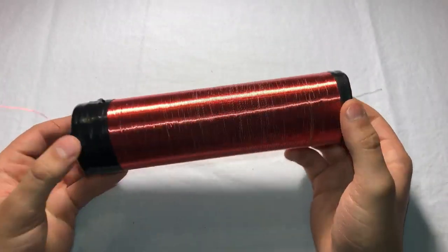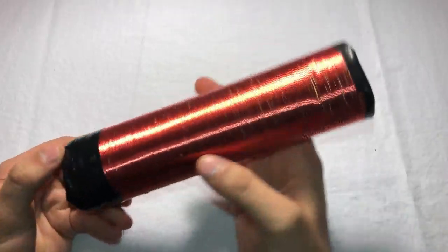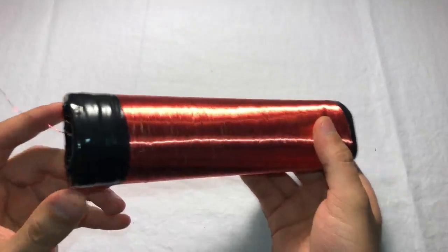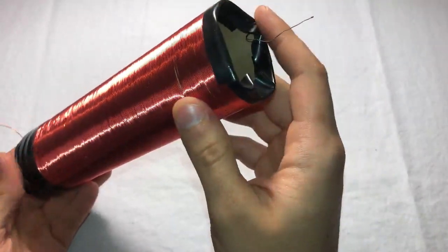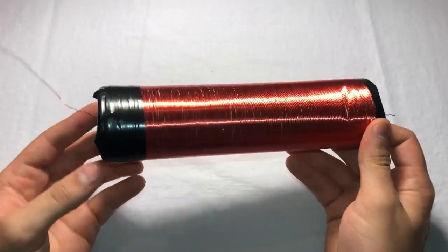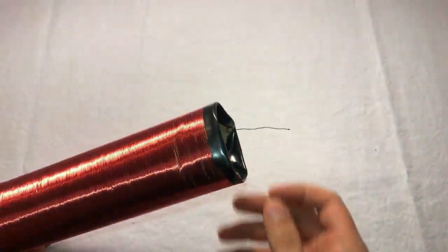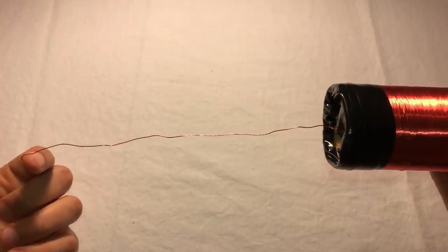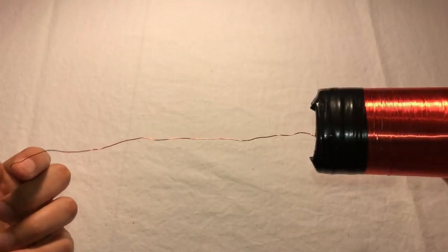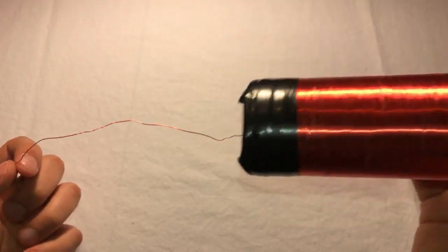And here we have our beautiful winded coil. 400 turns. Notice how I've taped the bottom and the top so that it doesn't unwind on me. And it gives it a nice finish too. And notice how I left some on the top. This is where our sparks can be coming from. And at the bottom we have a nice amount of wire so that we can connect it to our circuit. So let's get to building the circuit.